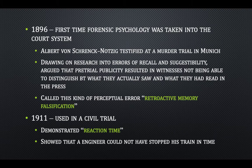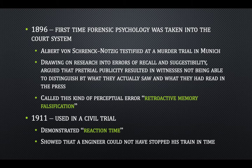In 1896, we see the first time forensic psychology is taken into the court system, at a murder trial in Munich. The researcher was drawing on research into errors of recall and suggestibility and argued that pretrial publicity resulted in witnesses not being able to distinguish between what they actually saw and what they read in the press. They called this perceptual error retroactive memory falsification. In 1911, it was first used in a civil trial where they looked at a train engineer's reaction time and showed that the engineer could not have stopped the train in time.